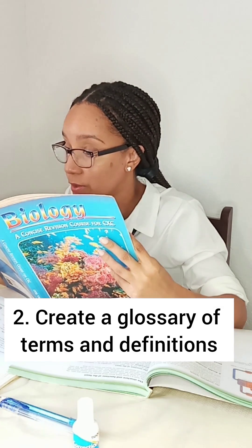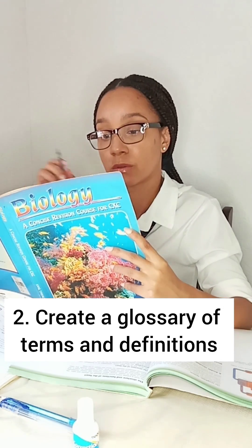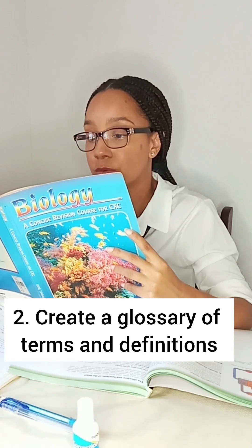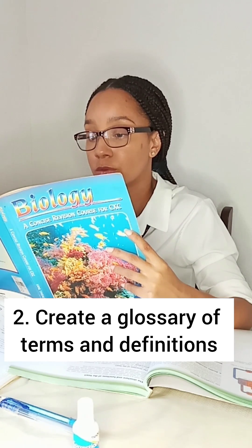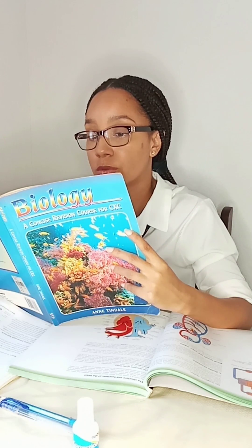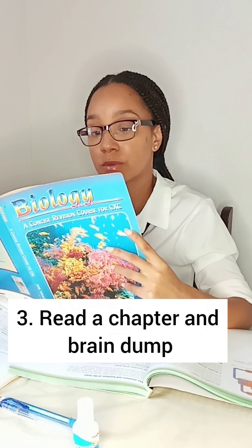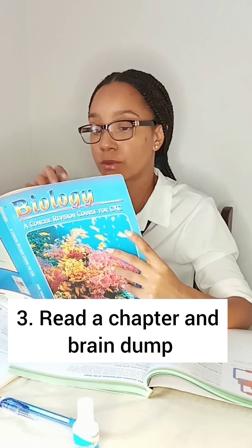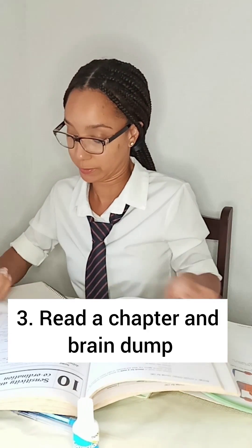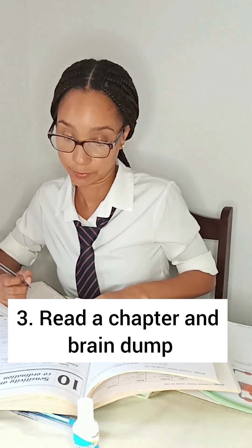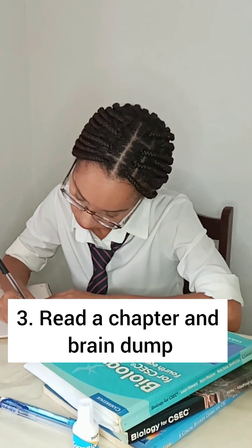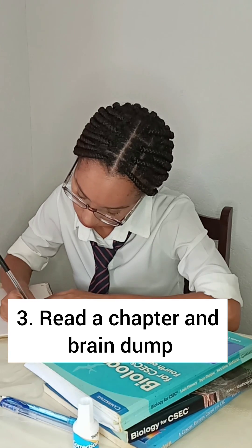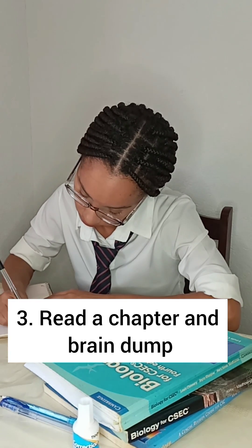Two: create a glossary of terms with definitions that you should know for each section on the syllabus. Three: read a chapter and then brain dump afterwards. Brain dumping is simply writing down everything you remember from what you just read.